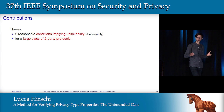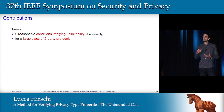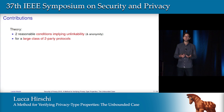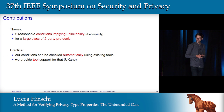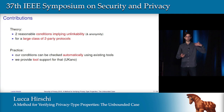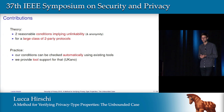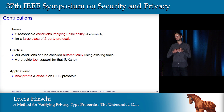Now I can give a big picture about our contributions. First, on the theoretical side, we define two reasonable conditions, and we prove that they always imply unlinkability and anonymity for a large class of two-party protocols. This is interesting in practice because we also show that we can verify precisely those conditions using existing tools like ProVerif, NPA, and Tamarin. And we provide tool support for that — we built a tool called UKano that automatically checks those conditions. Finally, we apply this to a bunch of RFID protocols and obtain new proofs and attacks.